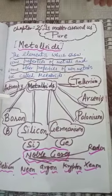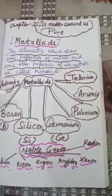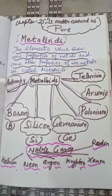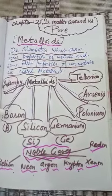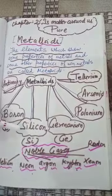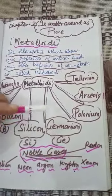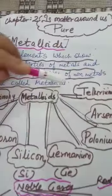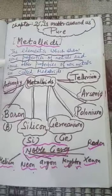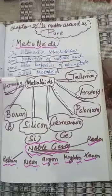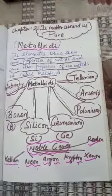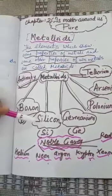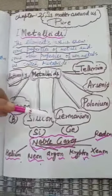There are seven elements that are considered as metalloids: antimony, boron, silicon, germanium, polonium, arsenic and tellurium. But the important examples of metalloids are boron, silicon and germanium.